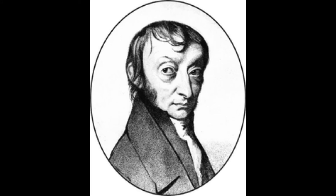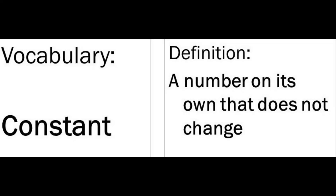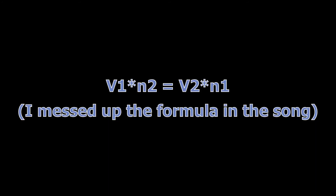Finally, Avogadro, all about volume and moles. As moles increase, guess what — volume increases too. Pressure and temperature must be constant, though. It's V1 times N2 equals V2 times N1. That's the formula, the formula, the formula.